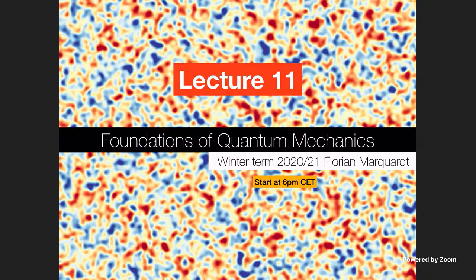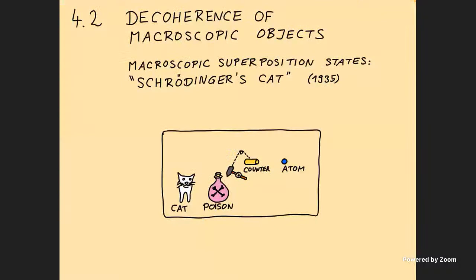Welcome everyone. Welcome back to the Foundations of Quantum Mechanics. Right now we are discussing decoherence — the loss of quantum interference. And I told you last time that what we want to look at now as a next step is decoherence of macroscopic objects. So that brings us to the favorite topic of everyone first getting interested in the Foundations of Quantum Mechanics, which is Schrödinger's cat.